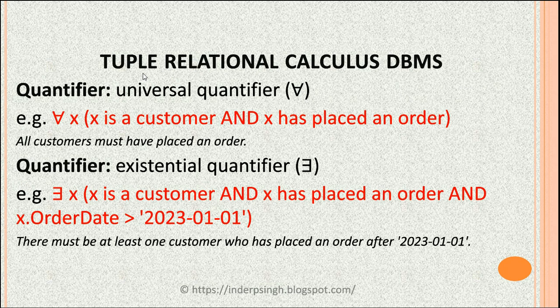In tuple relational calculus in DBMS there are two quantifiers. The first quantifier is called the universal quantifier. It is read as 'for all', meaning it is applicable to each tuple in the relation.